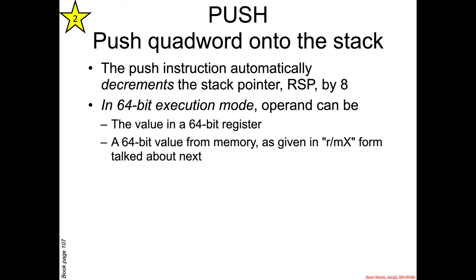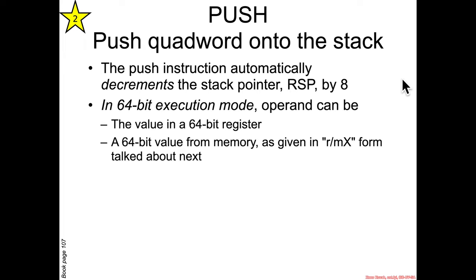For now let's understand how the assembly instructions work. The first one, push, pushes a quad word — eight bytes — onto the stack. When a push occurs, it automatically decrements the stack pointer RSP by eight, because you've just pushed eight bytes of data onto the stack. The stack grows towards low addresses, so RSP needs to go down by eight.